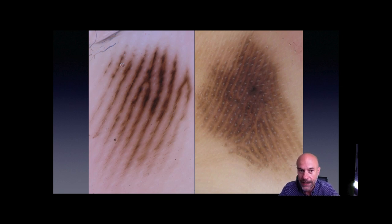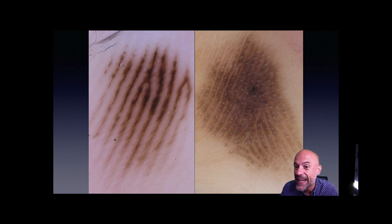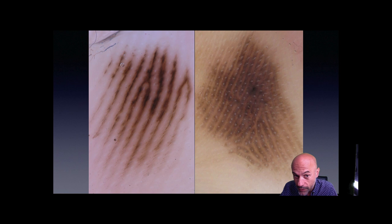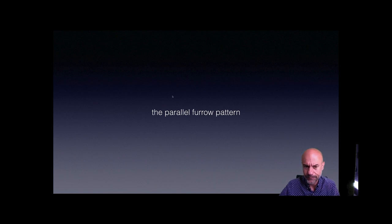Looking at real dermatoscopic images: parallel furrow pattern on the left — the pigmented lines are much thinner than the non-pigmented ones. On the right, parallel ridge pattern — the pigmented lines are much thicker. On the right, you can also see the eccrine duct openings on the pigmented lines. In the left image, the eccrine duct openings are located on the non-pigmented line. Parallel furrow pattern on the left, parallel ridge pattern on the right — this is very important basic knowledge.